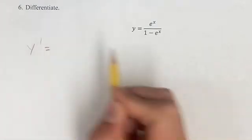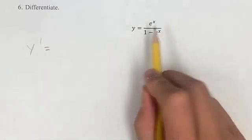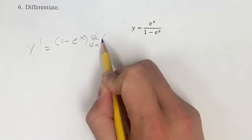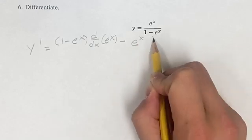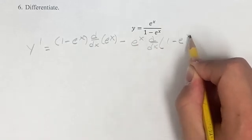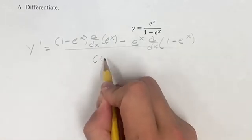We're going to do this using the quotient rule. Our derivative is going to be the denominator times the derivative of the numerator, minus the numerator times the derivative of the denominator, all over the square of the denominator.